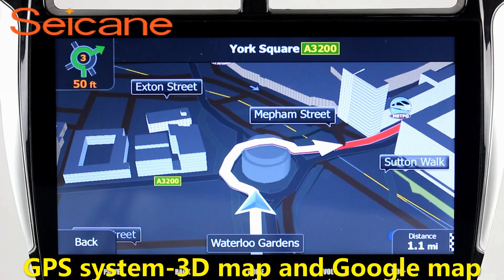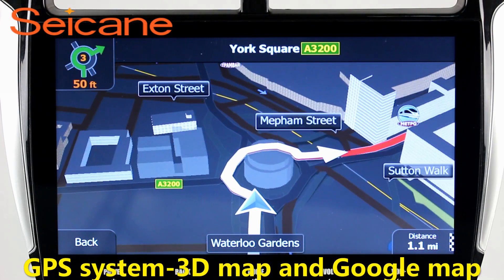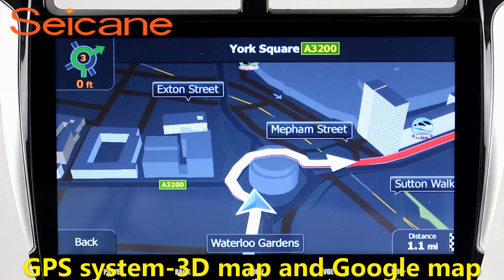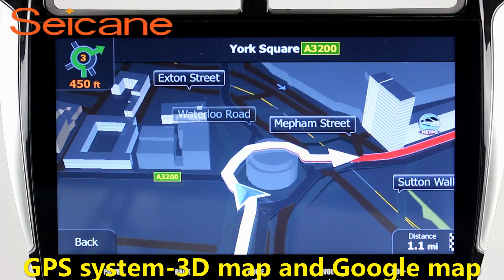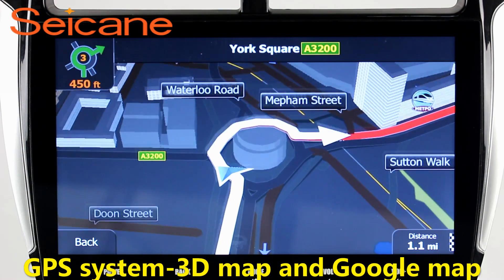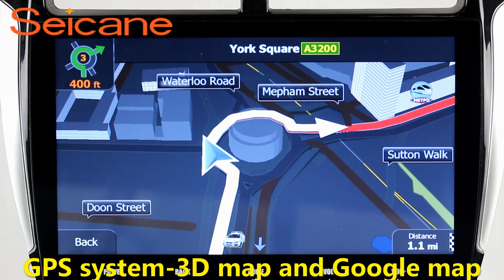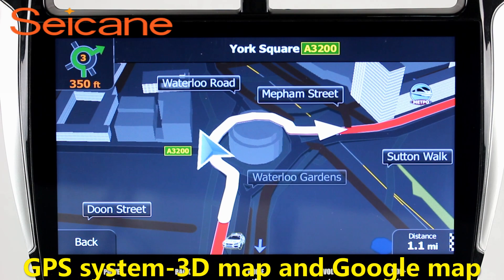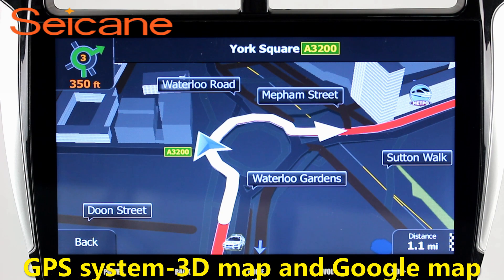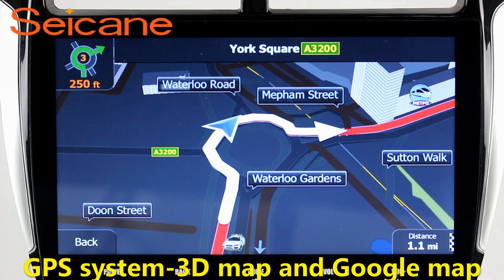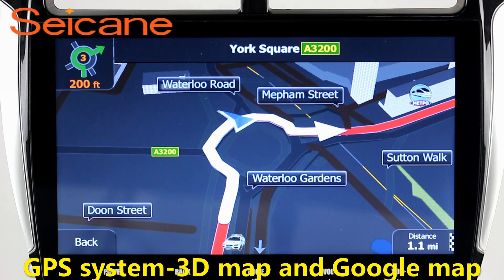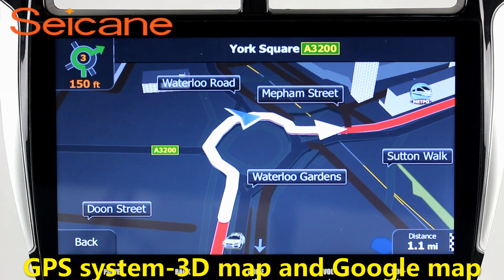GPS. Go to the main menu and open the GPS system. The 3D navigation map shows you accurate GPS locations and route information. It also supports Google Maps. You will never get lost with this function.